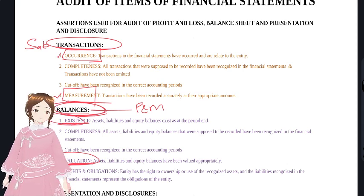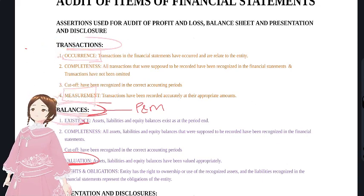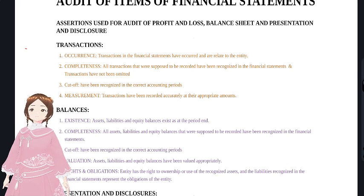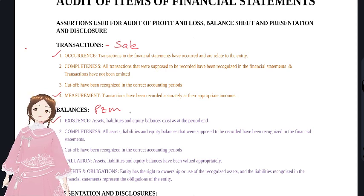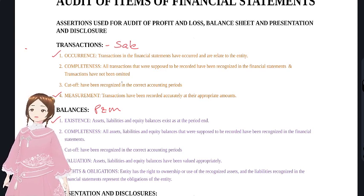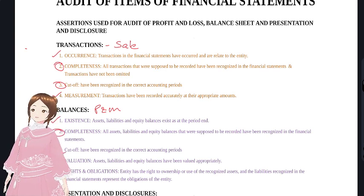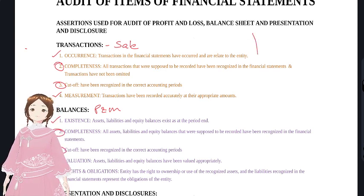Two assertions common to both transactions and balances are completeness and cutoff. For example, a sale transaction and plant and machinery both need completeness and cutoff. Management asserts that plant and machinery has been valued properly as per AS 16 or other applicable standards.